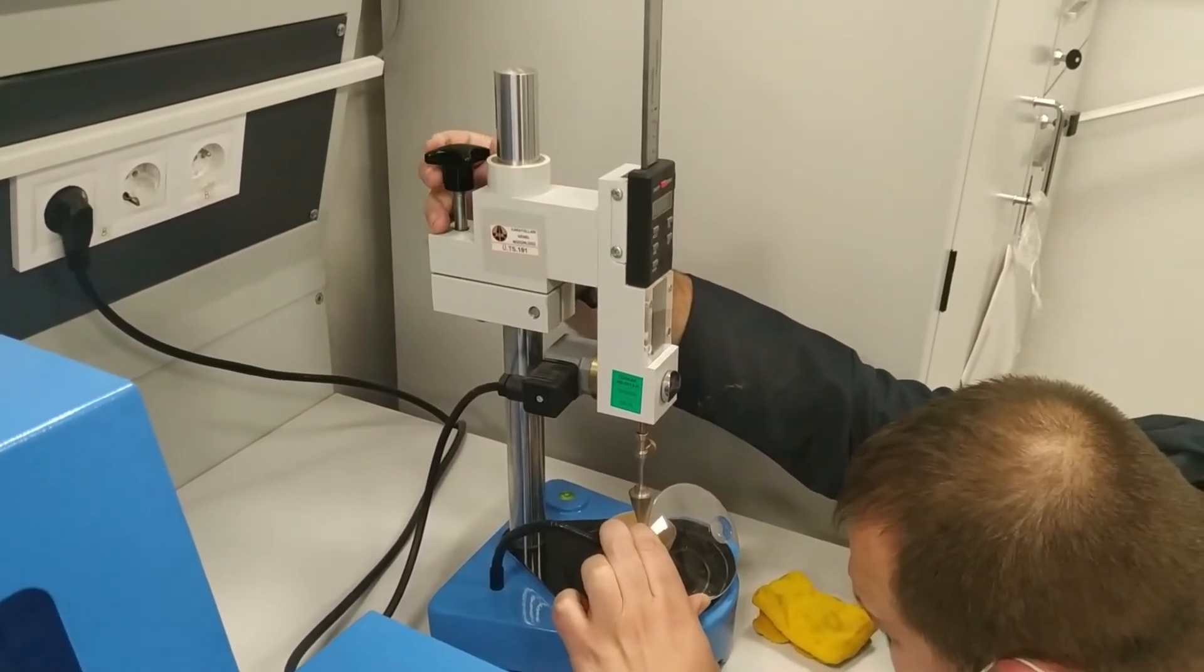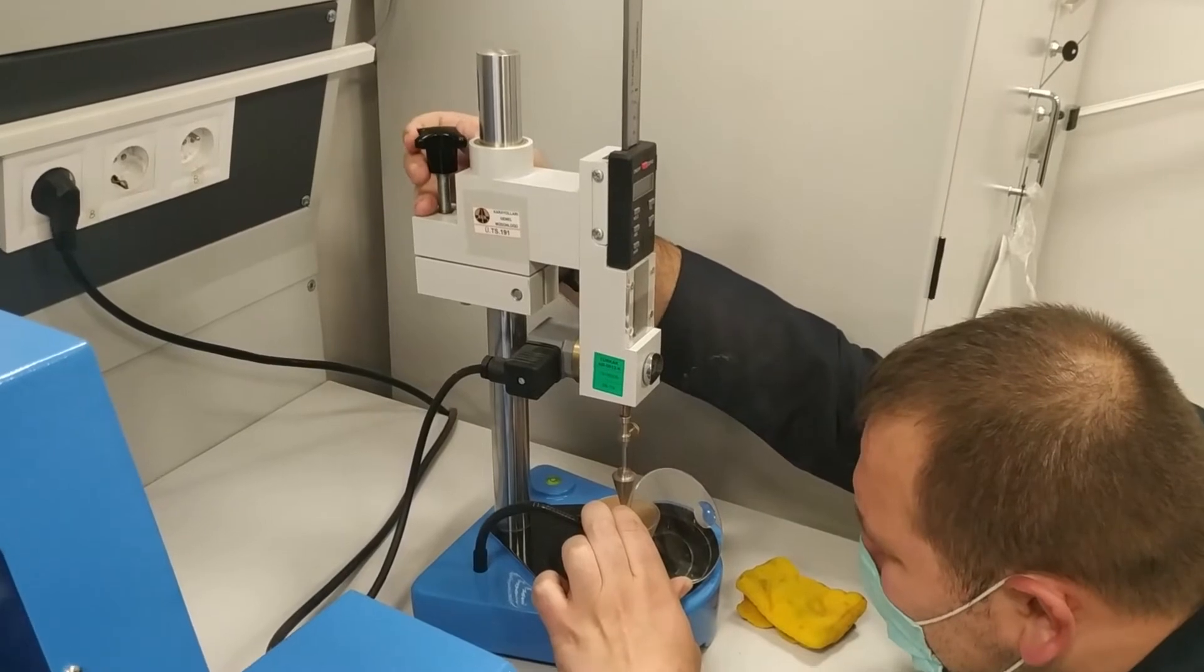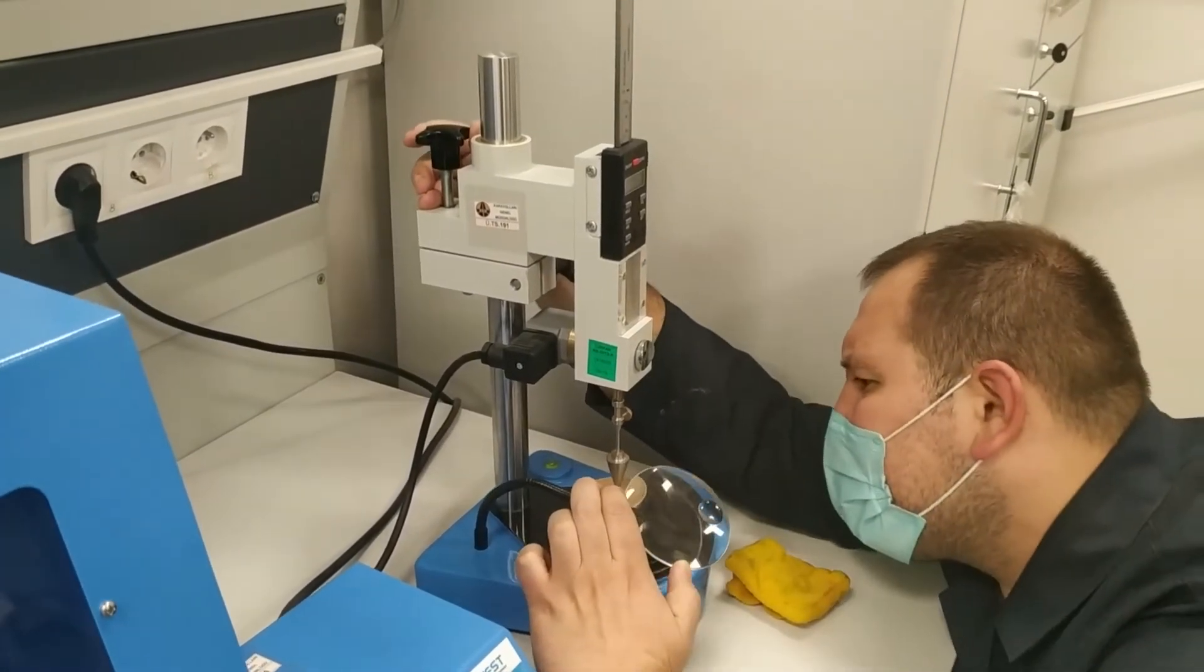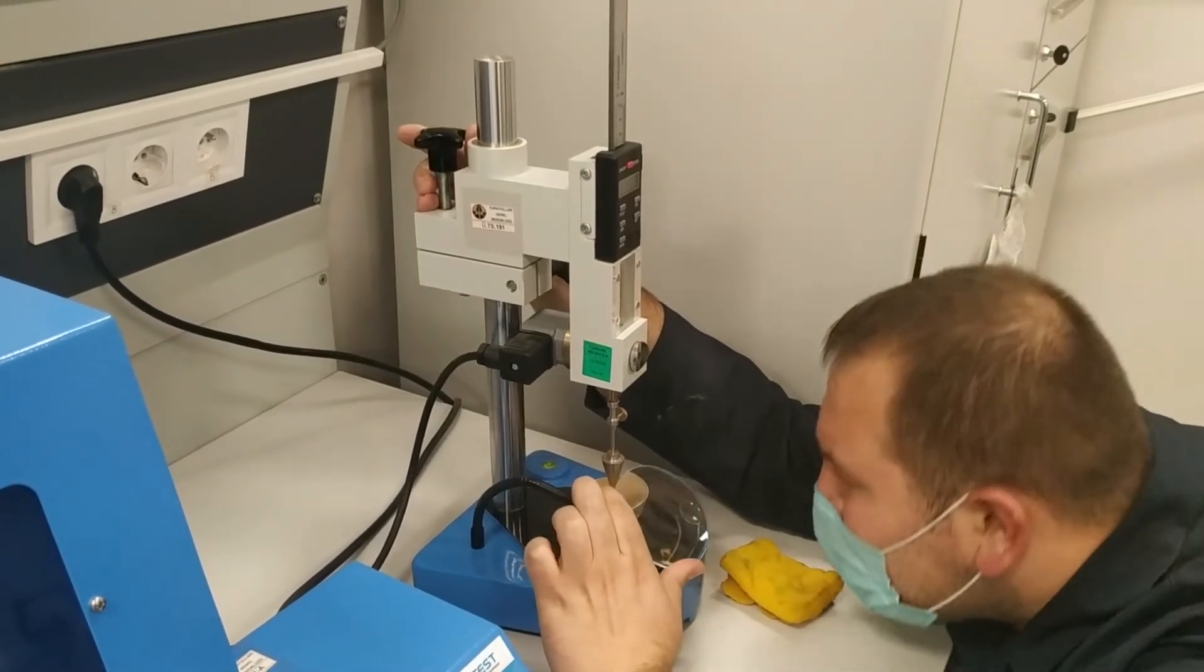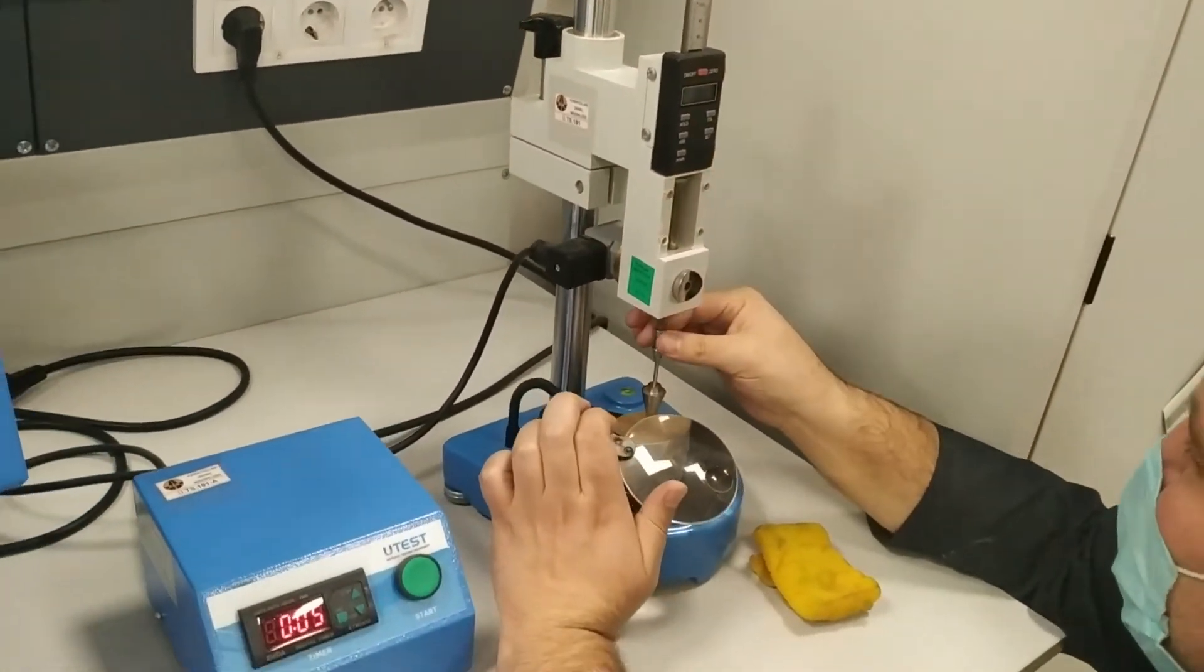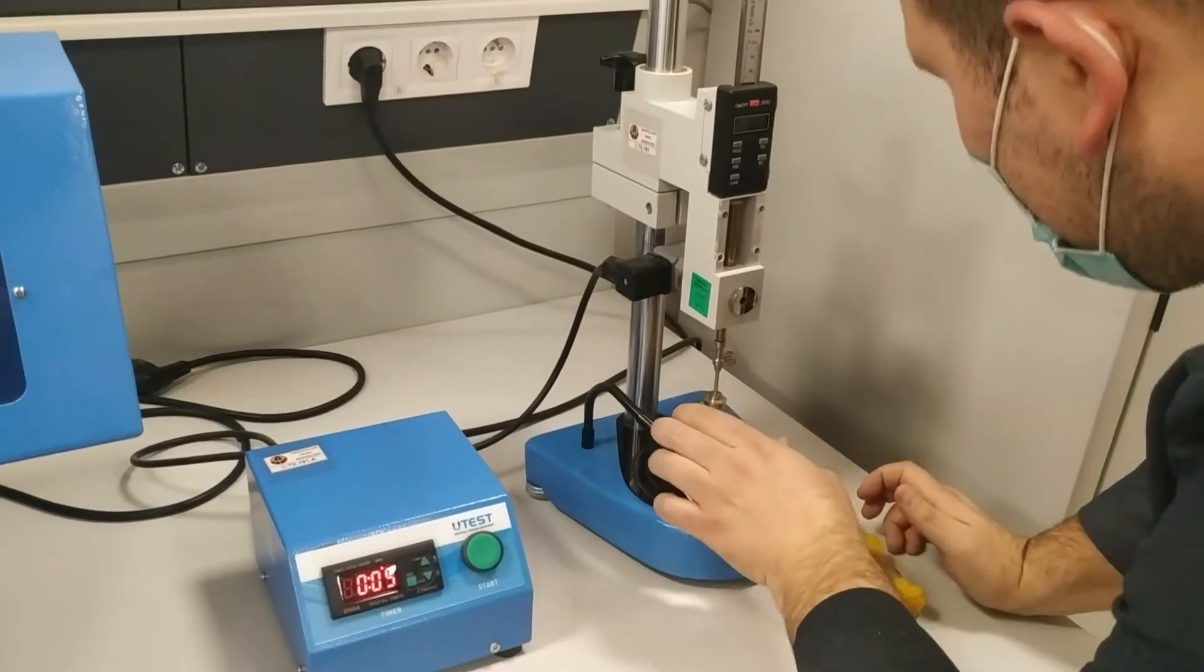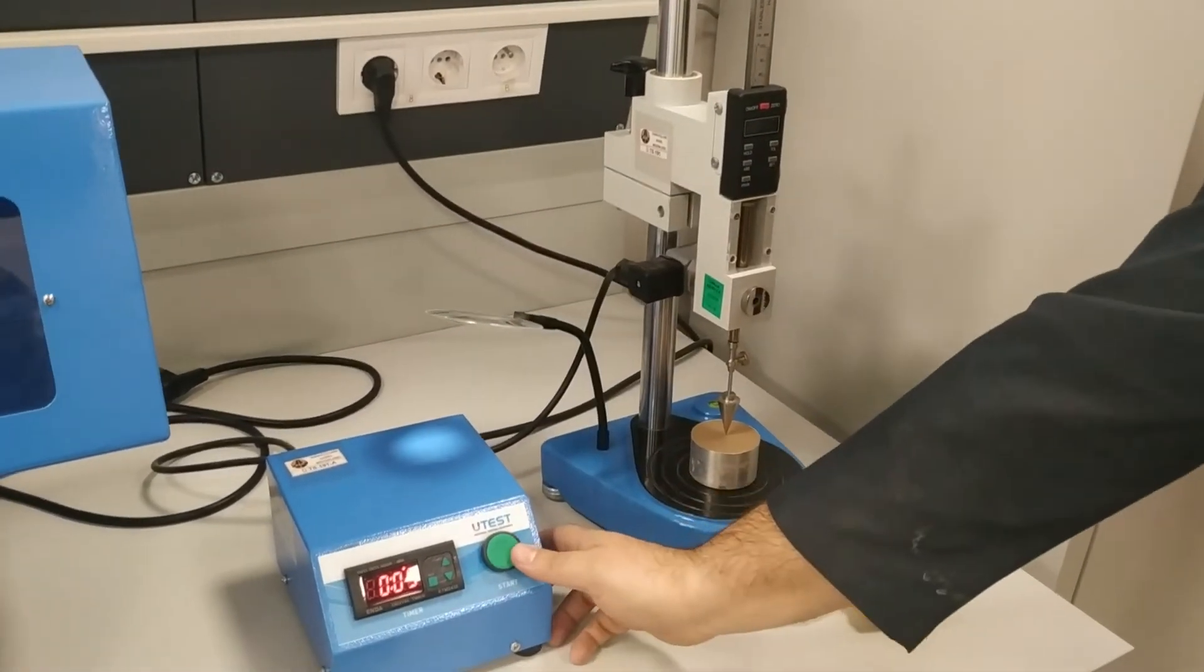For the 60 gram, 60 degree apex cone, the acceptable penetration range is from 7 to 15 millimeters. For the 80 gram, 30 degree apex cone, the acceptable penetration range is 15 to 25 millimeters.